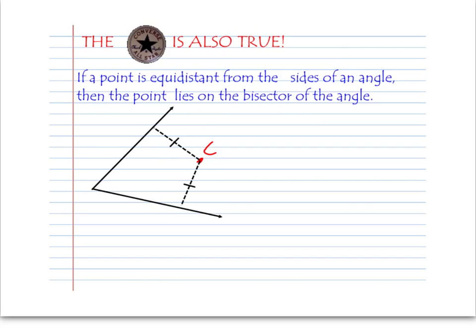Of course, the converse is also going to be true. So if you have a point somewhere inside that angle and it's equidistant from the sides of the angle — I've drawn this point C right here, and it's equidistant from the sides by the markings, so the distance to this side and the distance to that side are equal — then if I were to draw the angle bisector, that point C must lie on the angle bisector of that angle. The angle bisector must go right through point C. That's the converse of that theorem.